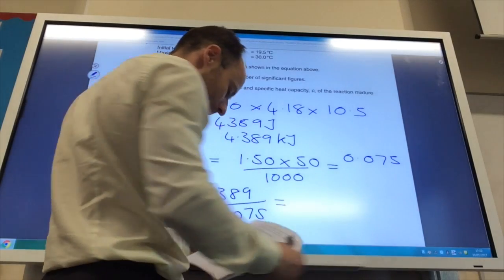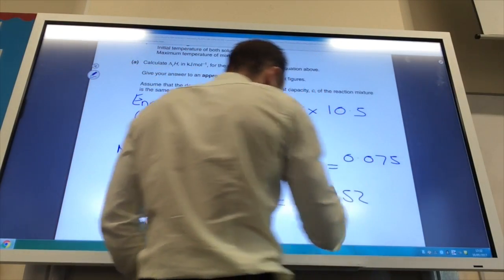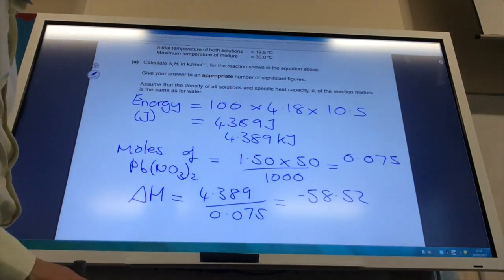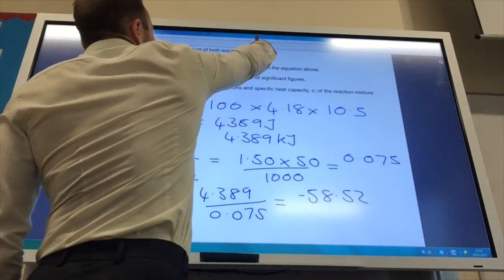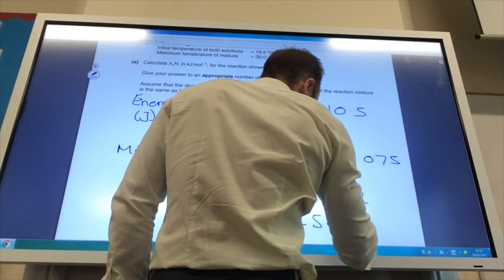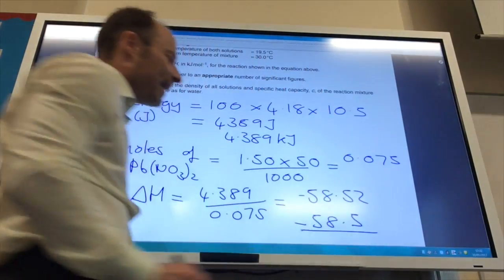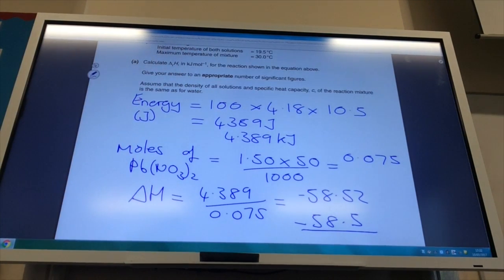That comes to 58.52, which is a minus. They asked me to give it to an appropriate number of significant figures. If you notice, they give me everything here to 3 significant figures, and therefore your final answer is minus 58.5 kilojoules per mole.